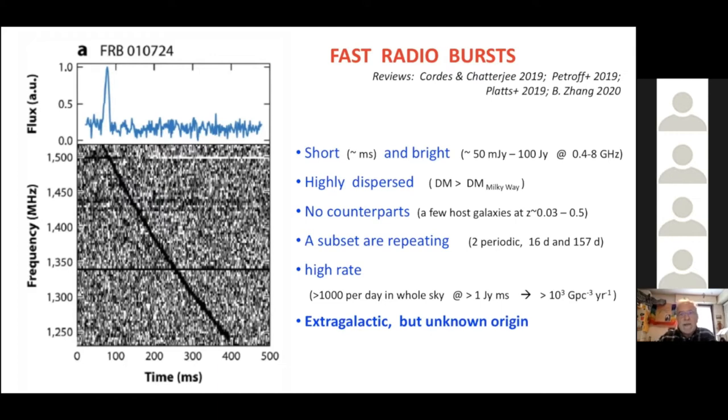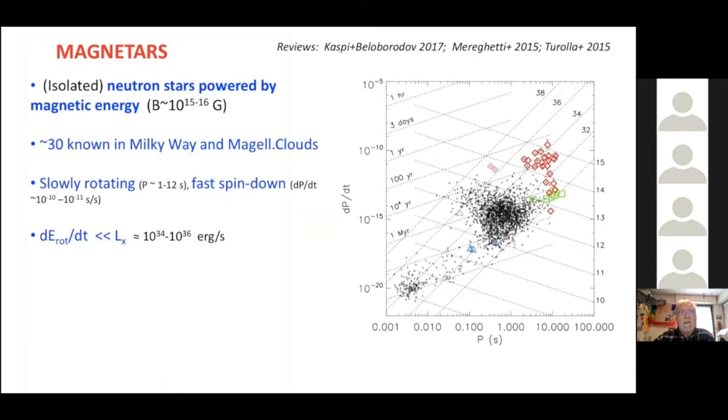On the other hand, we know reasonably well what the magnetars are. Magnetars are a small subset of neutron stars that are powered by magnetic energy. You see their position by the red points in these P P-dot diagrams. And contrary to the majority of radio pulsars that we know, they are not powered by rotational energy losses.